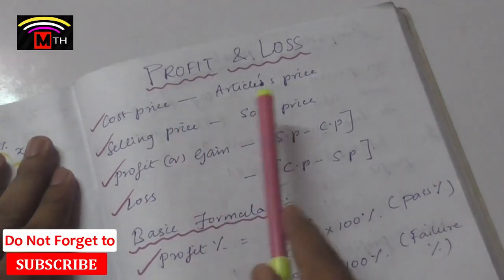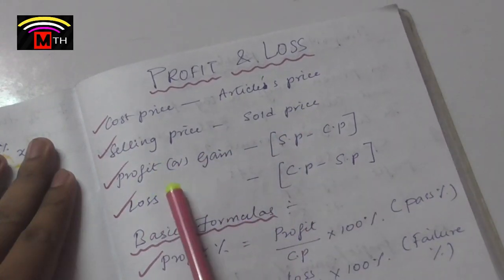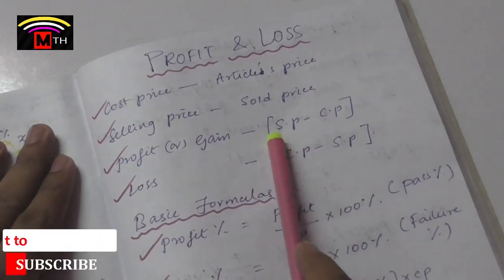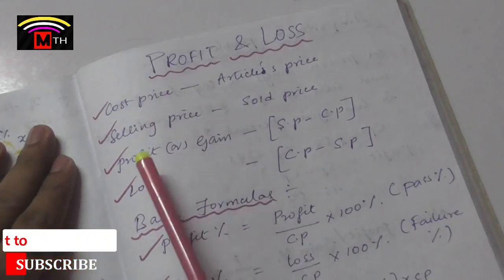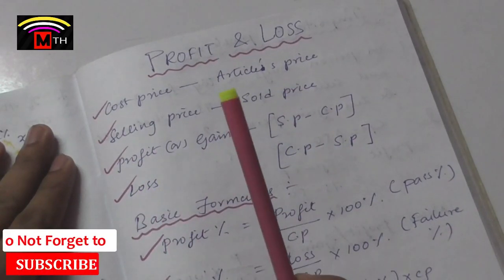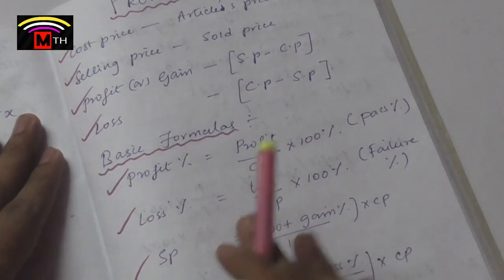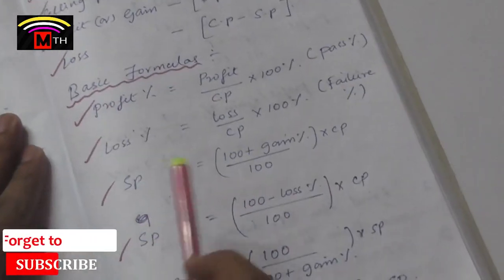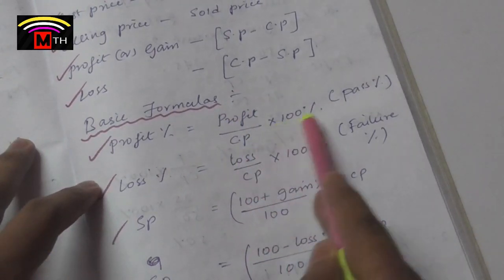Profit and Gain: if you want to know the profit, we will find the two formulas. Profit or Gain equals Selling Price minus Cost Price. The basic formula: Cost Price minus Selling Price gives the Loss.